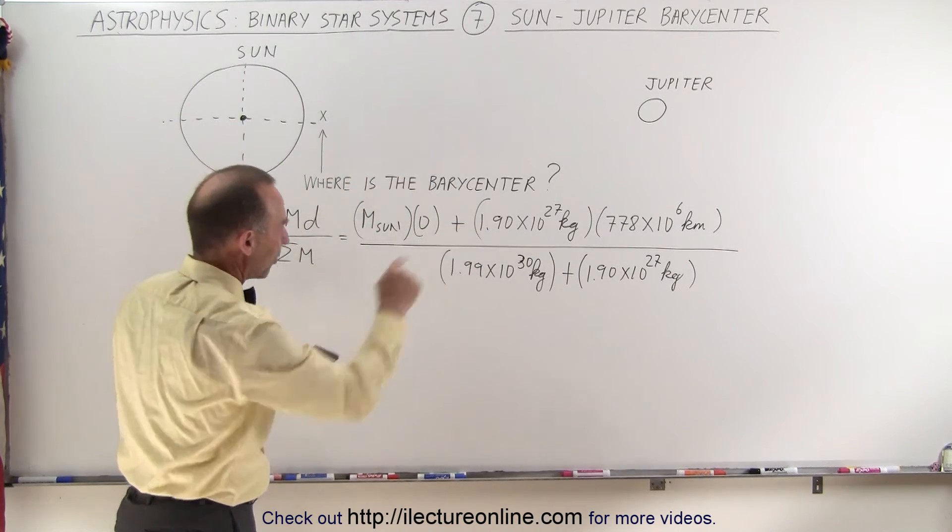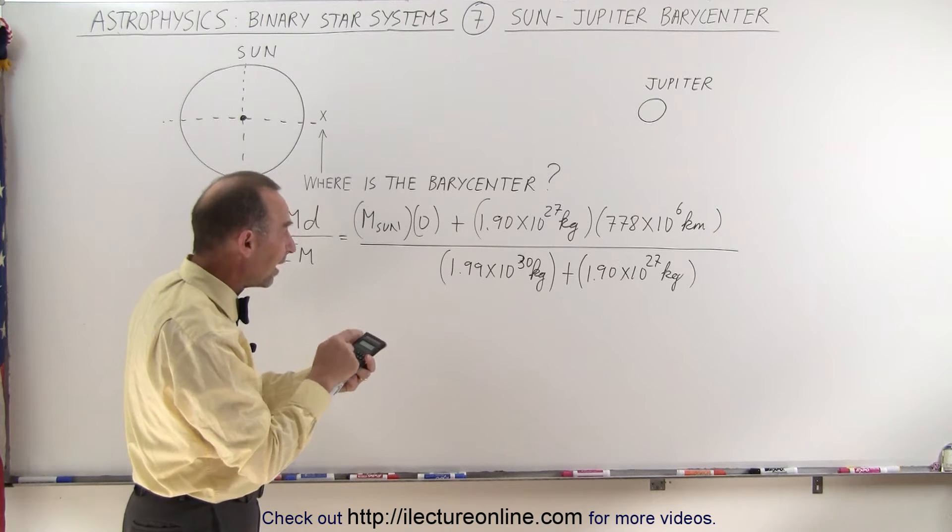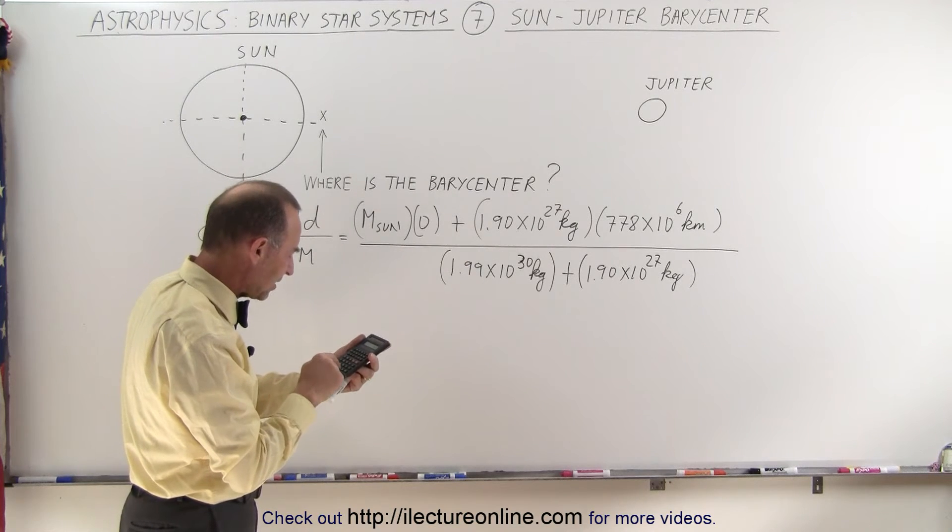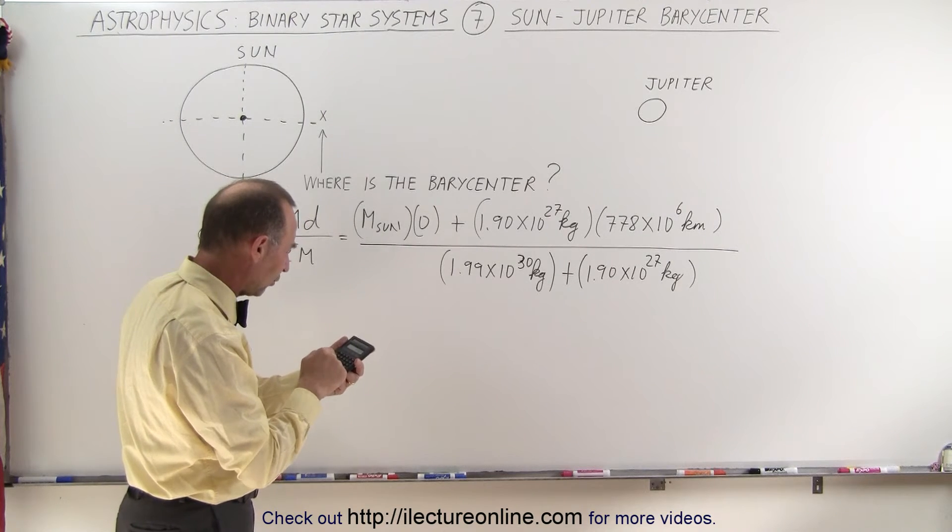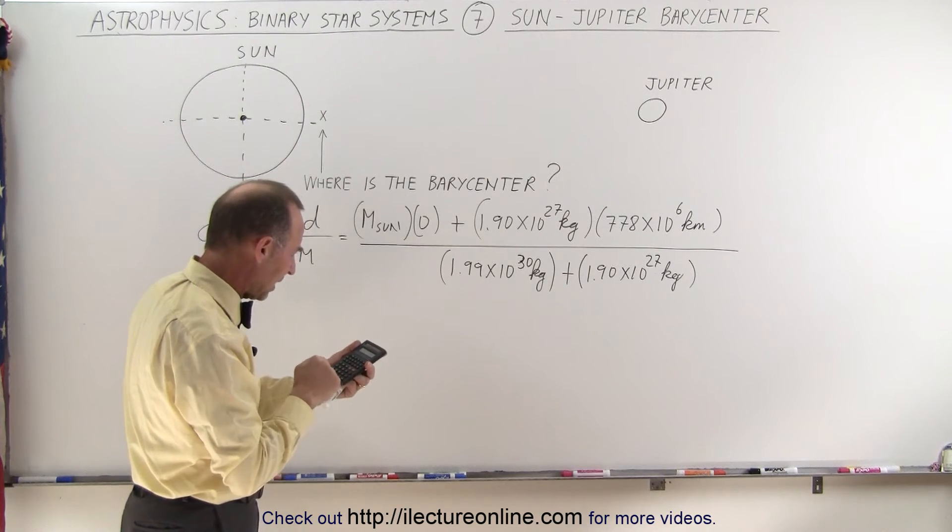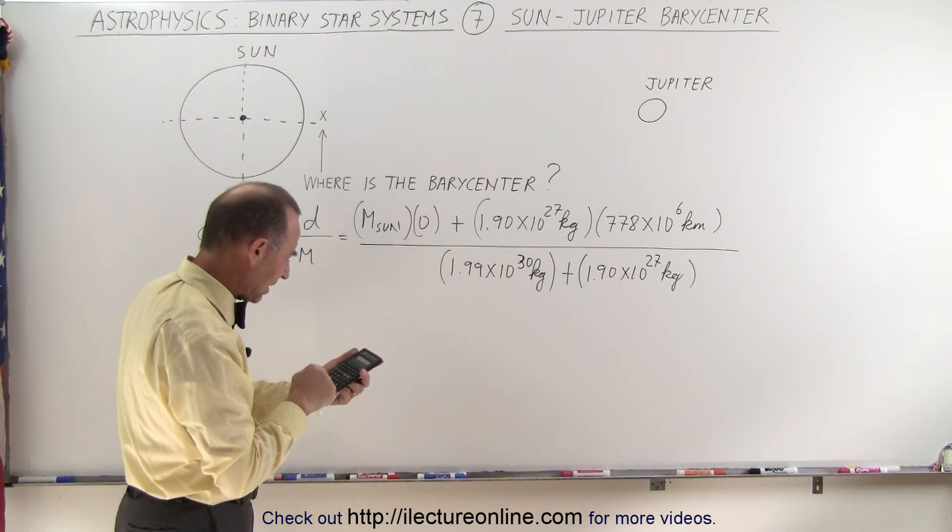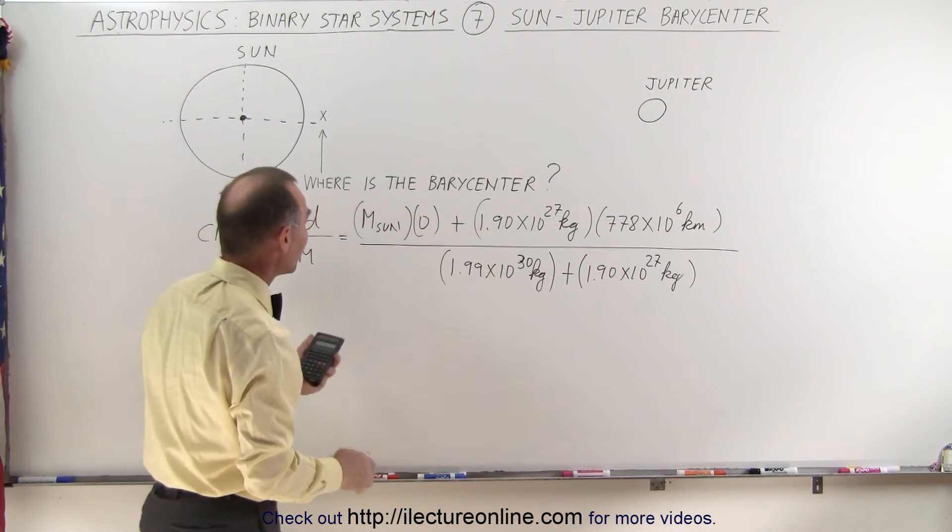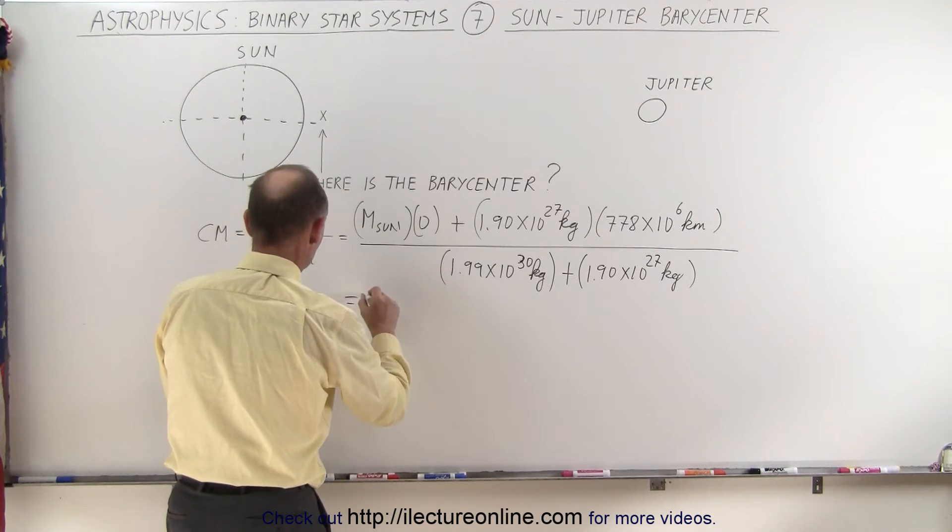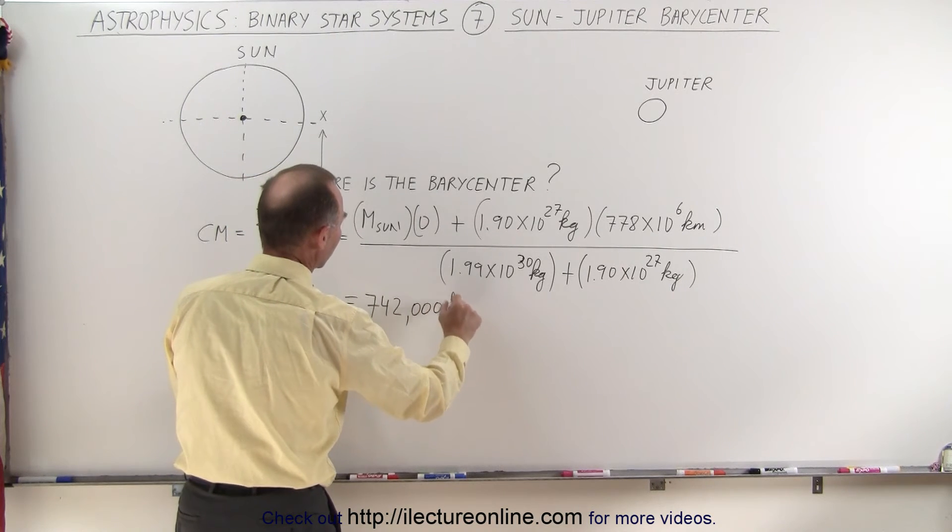Let's calculate that. We multiply 1.9 e to the 27th times 778 million e to the 6th, and we divide that by the sum of those two: 1.99 e to the 30th plus 1.9 e to the 27th. Notice that equals 742,000 kilometers.